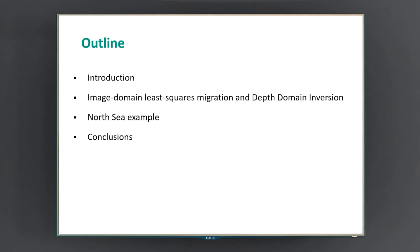This is the outline of my talk. I will start with the problem definition and how residual wave propagation effects have a detrimental effect on imaging at the reservoir level, and therefore affect the interpretation of amplitude changes. I will then explain how this problem can be addressed by Depth Domain Inversion and discuss the relationship between Depth Domain Inversion and an image domain approach to least-squares migration. Finally, I will conclude with a case study from the North Sea.